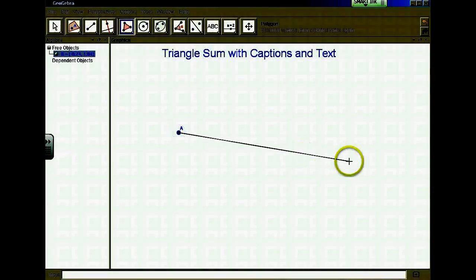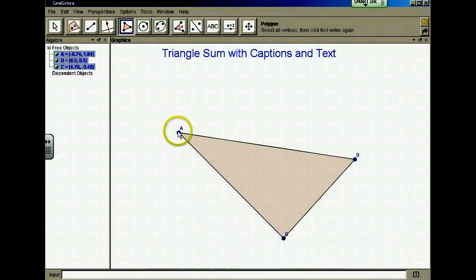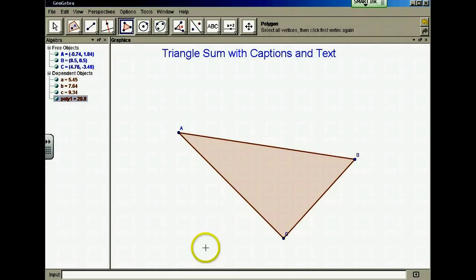We will begin with a triangle and I think I'll use the polygon tool to make a triangle. So one, two, three clicks and then back to the first. We'll finish the triangle.